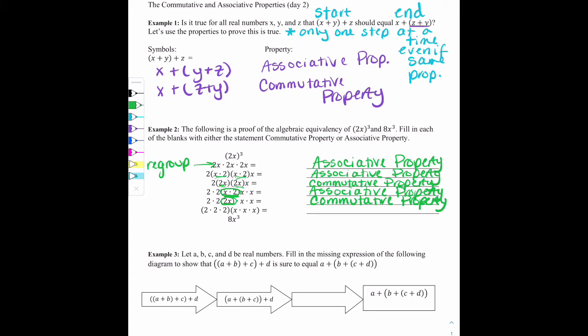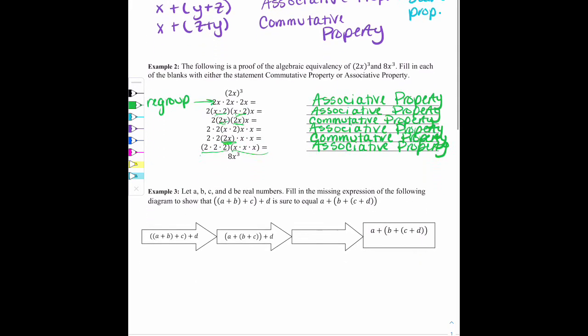Now you can see I've regrouped. If I erase these markings just so you can see a little bit better, you'll notice that the 2x was in parentheses, and now we have all the 2s in parentheses and all the xs in parentheses, which means again, it was a change in grouping. So this is the associative property, showing that I really have 8x to the third power, or 8x cubed.